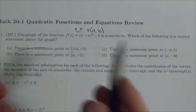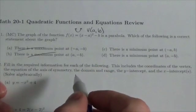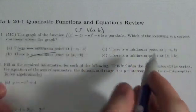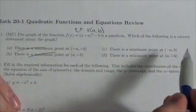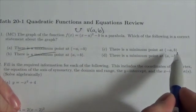There is a maximum point. Okay, we already decided that it doesn't have a maximum. It has a minimum. So we're over here. There is a minimum point at (-a, b).